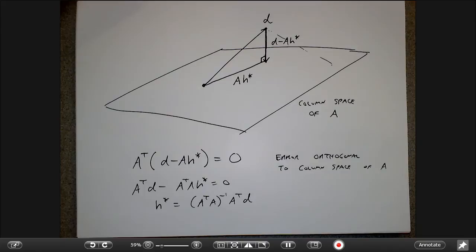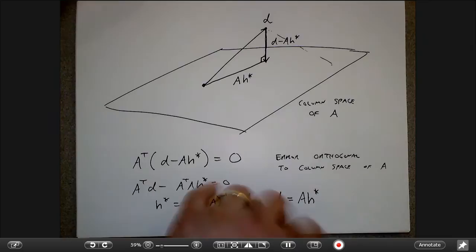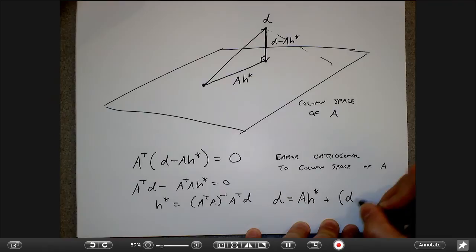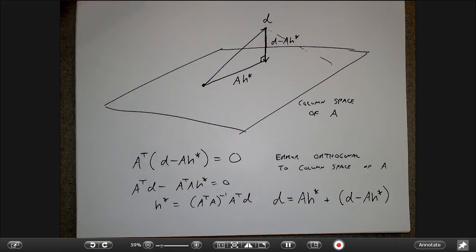I can write the desired vector as AH* — the part achievable in the column space — plus the error, the part not achievable there. I would strongly recommend taking a 4000-level linear algebra course in the math department if you're continuing in electrical engineering — really understanding matrix equations, eigenvalues, and eigenvectors. Even if you're almost graduated, tell your younger friends: take linear algebra.